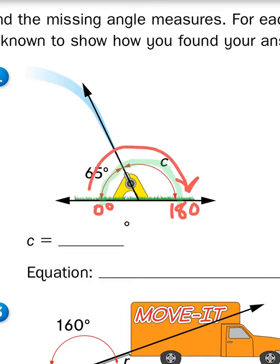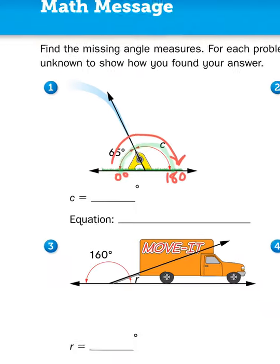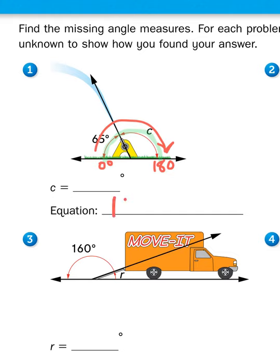So in order to find the missing measurement, what I have to do is I have to take my total amount of degrees, 180, and I need to subtract the information I already know, which is 65 degrees, and then subtract the difference to get my answer. Since they gave us an unknown C, that's what I'll put here. So all I have to do is subtract 180 minus 65.